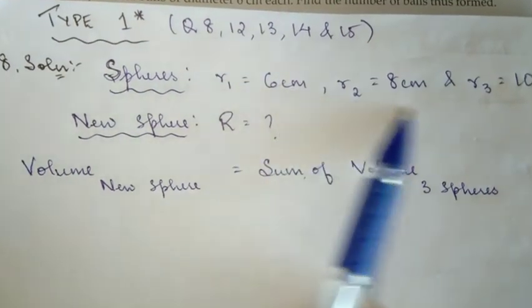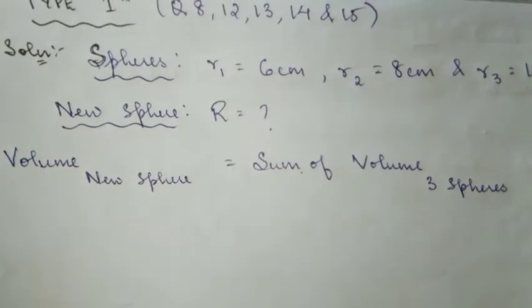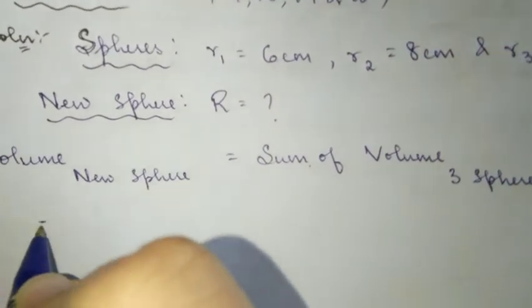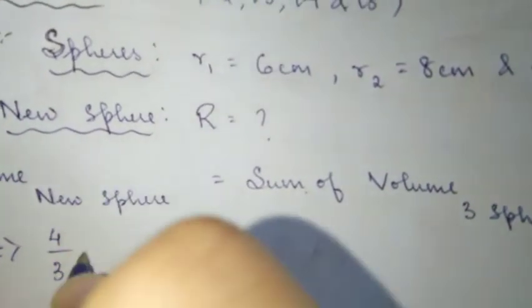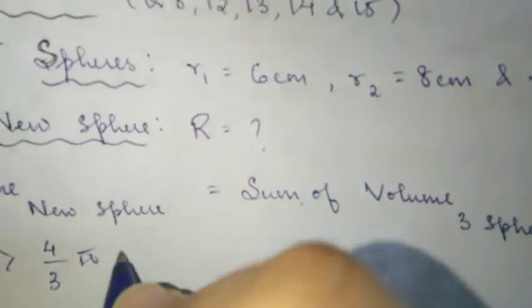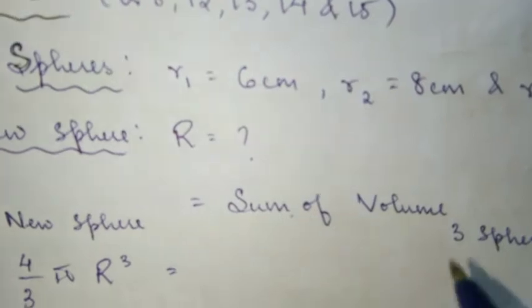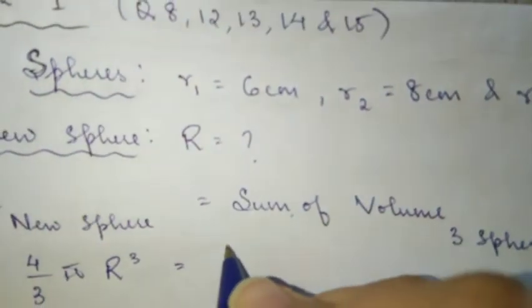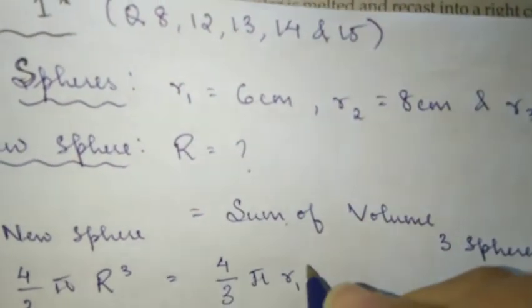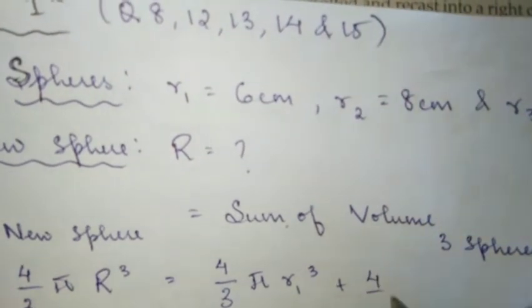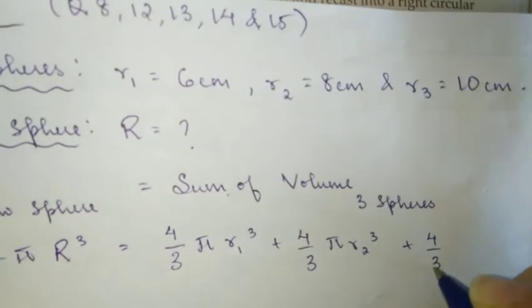So we're going to write the volume formula. Volume of a sphere is four by three pi r cubed. So the sum of volume of three spheres will be: volume of first sphere plus volume of second sphere plus volume of third sphere. That's four by three pi r one cube plus four by three pi r two cube plus four by three pi r three cube.